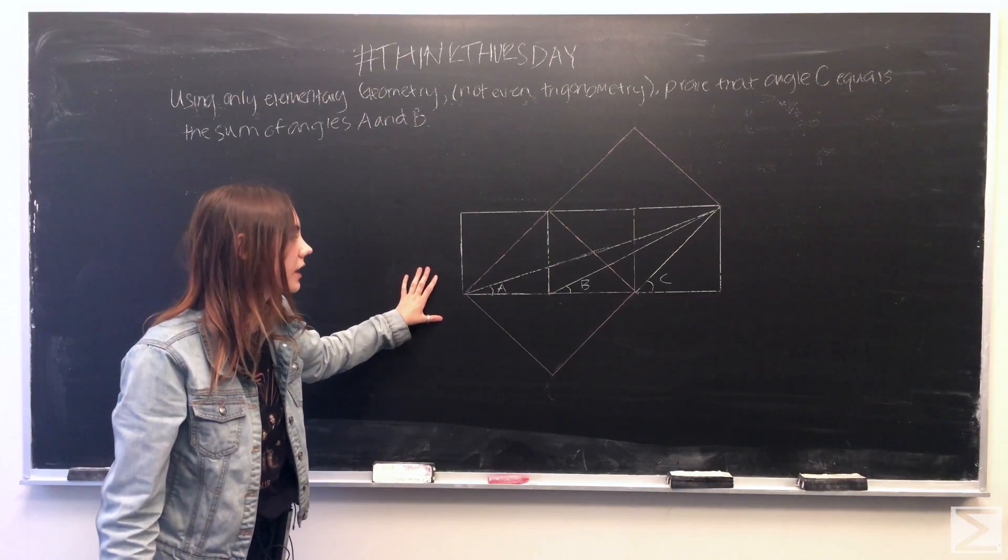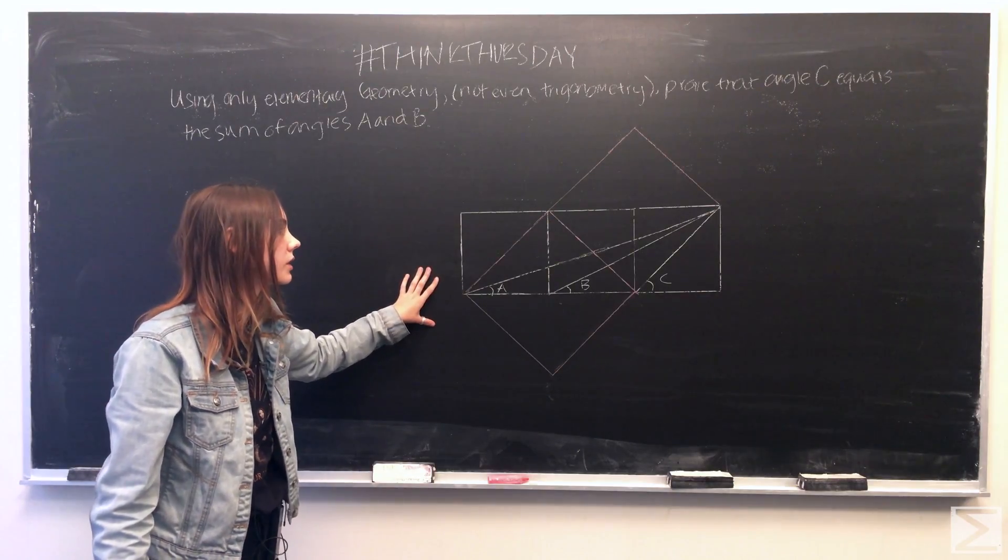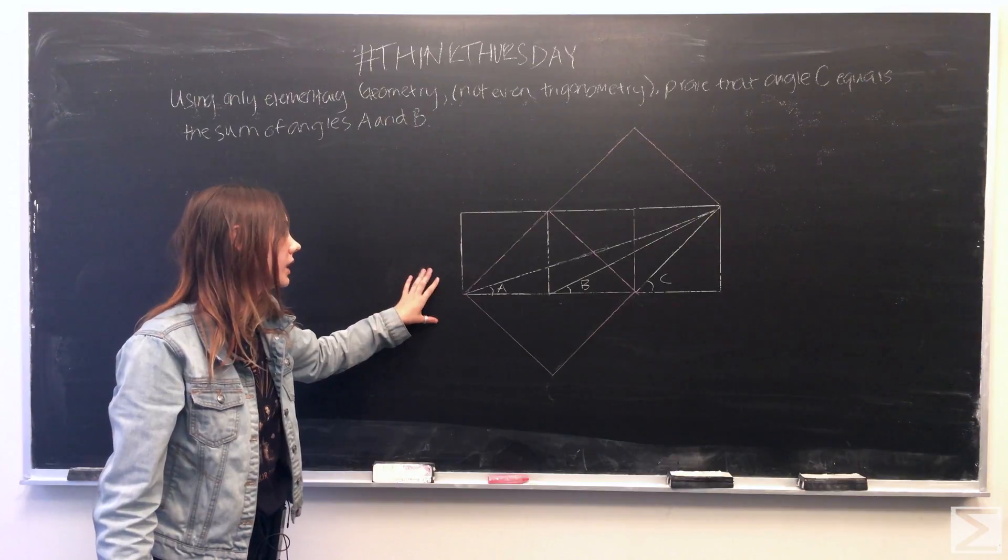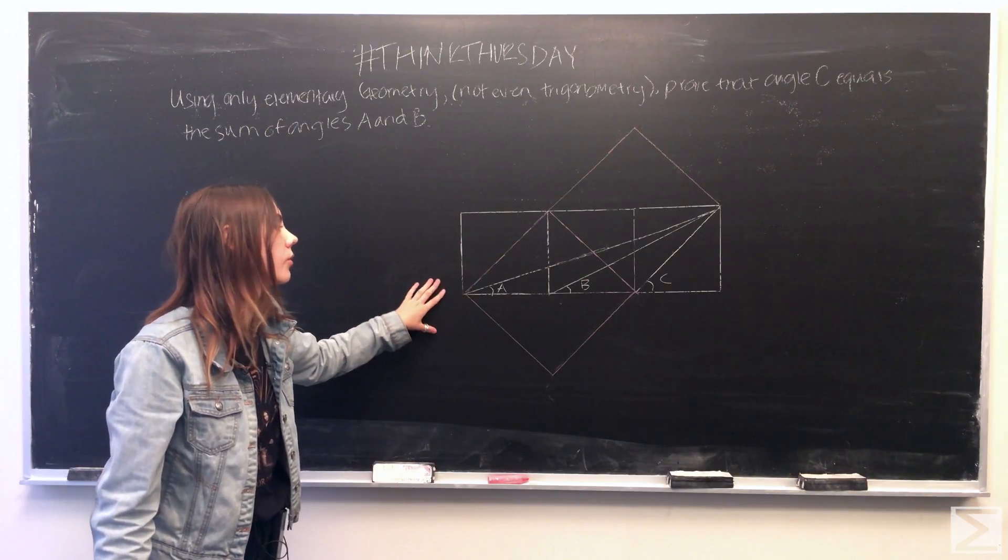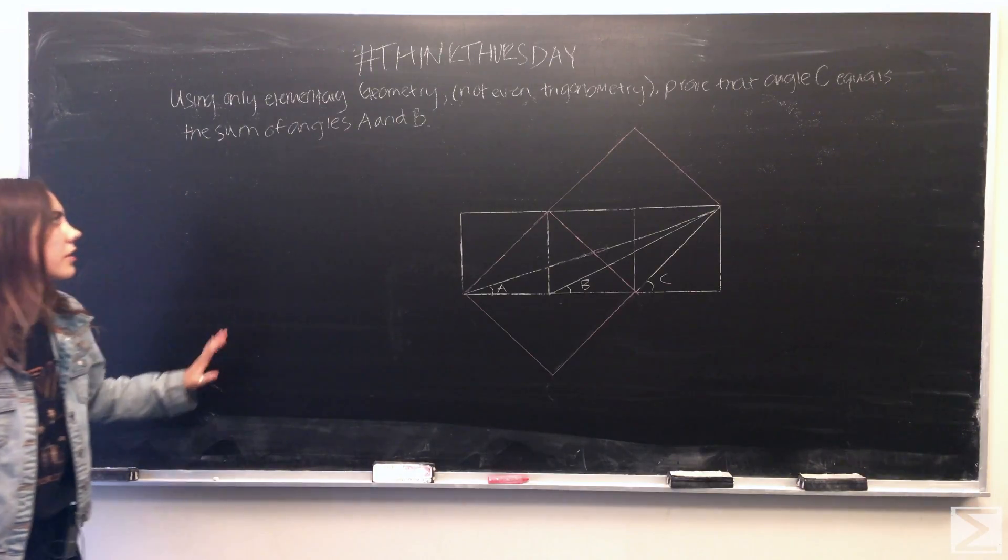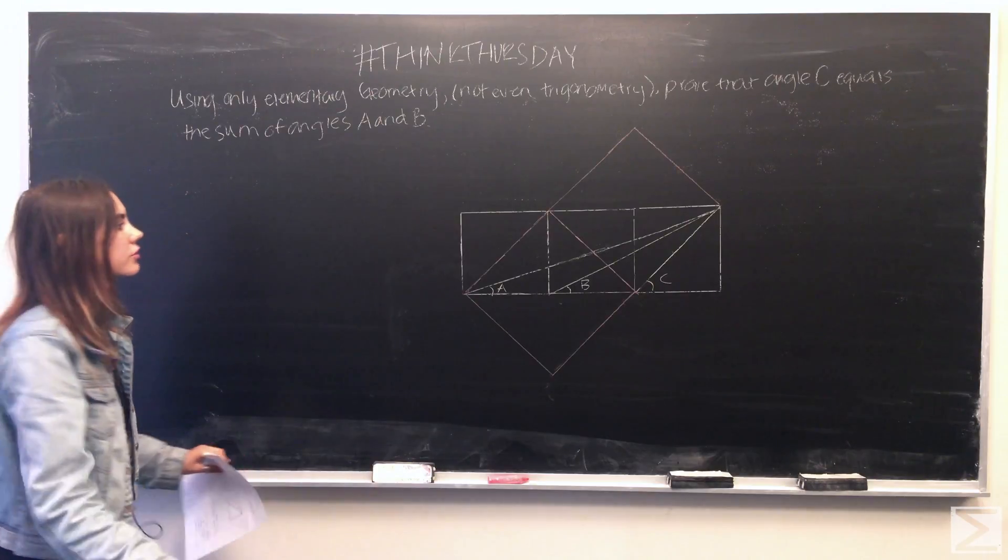And what we can now do is compare different angles in the different squares to show that angle C is equal to the sum of angle A plus B. So what we're trying to prove is this.